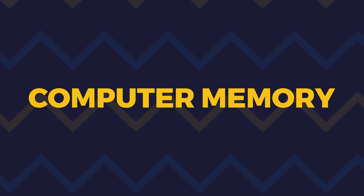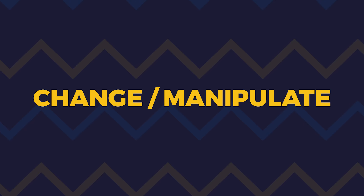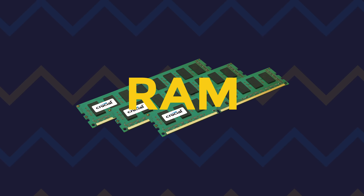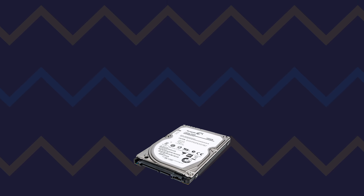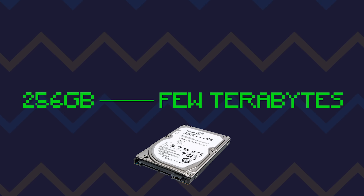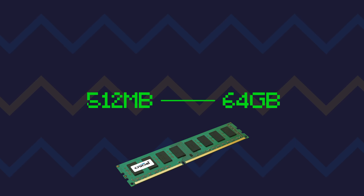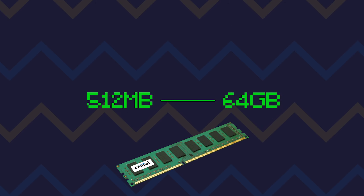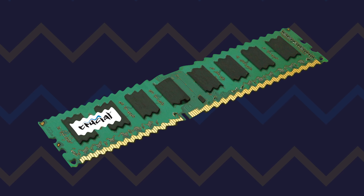We know that all our files on a computer live on your disk drive, whether it's HDD or SSD. But we also know that to change or manipulate that data, we need to move it to RAM — Random Access Memory. RAM does not have anywhere near the amount of space that a normal disk drive has. Normally disk drives have about 256 gigabytes up to a few terabytes of storage, but RAM has quite a lower amount, ranging from 512 megabytes on an older machine to maybe 64 gigabytes. RAM is pretty volatile — as soon as you turn off your computer, all the data disappears because it's temporary.